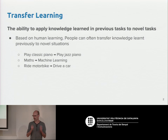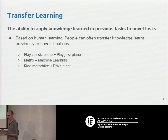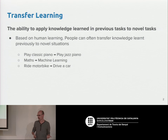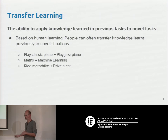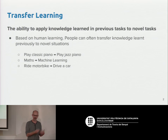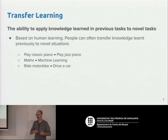If I do math, it's easier for me to learn machine learning. Or if I know how to ride a motorbike, I could learn faster to drive a car, because there is part of the knowledge that is shared among different tasks. The purpose of this class is to learn how computers can do something similar — how they can use previous experience to learn faster or better.